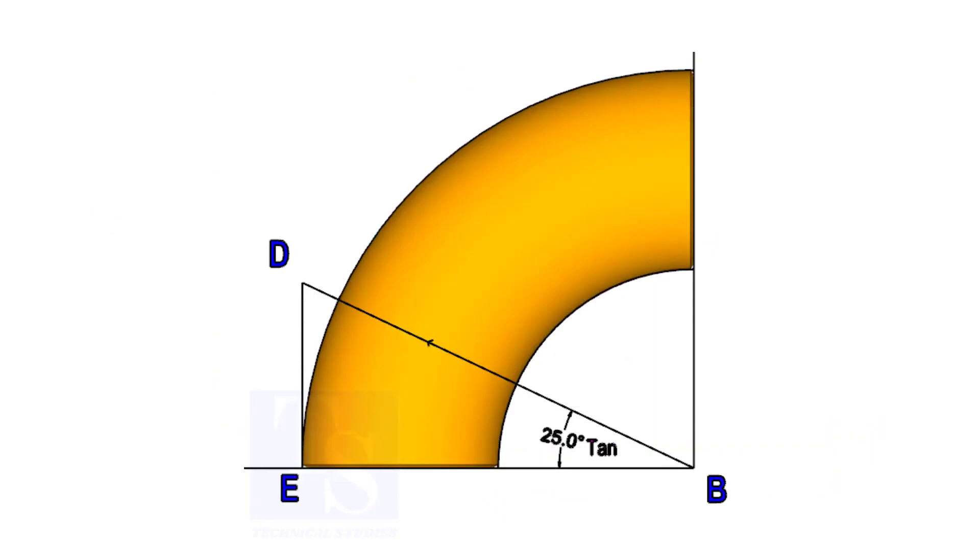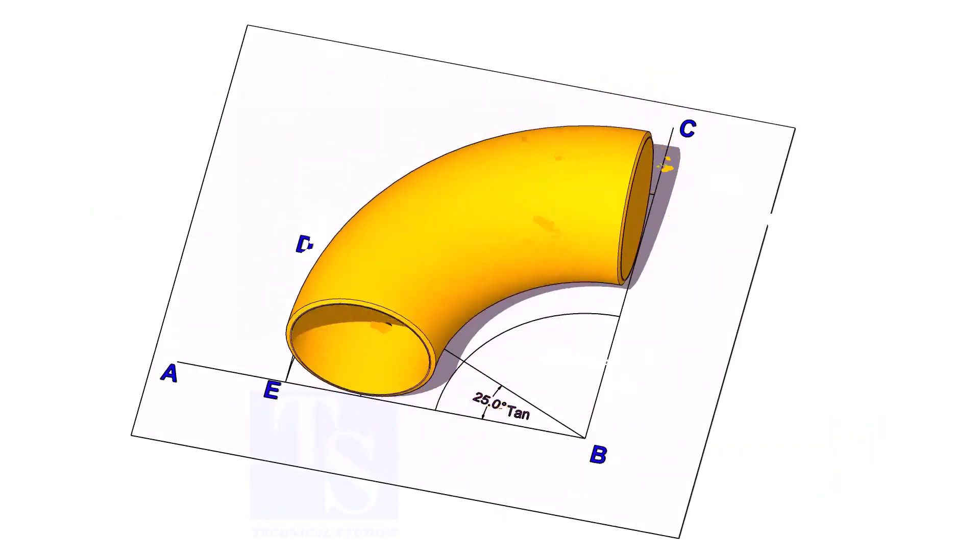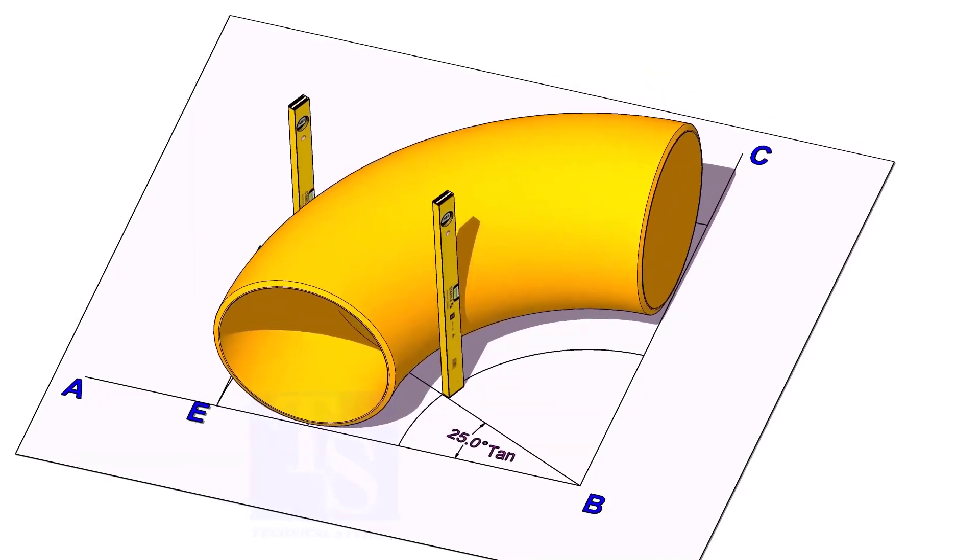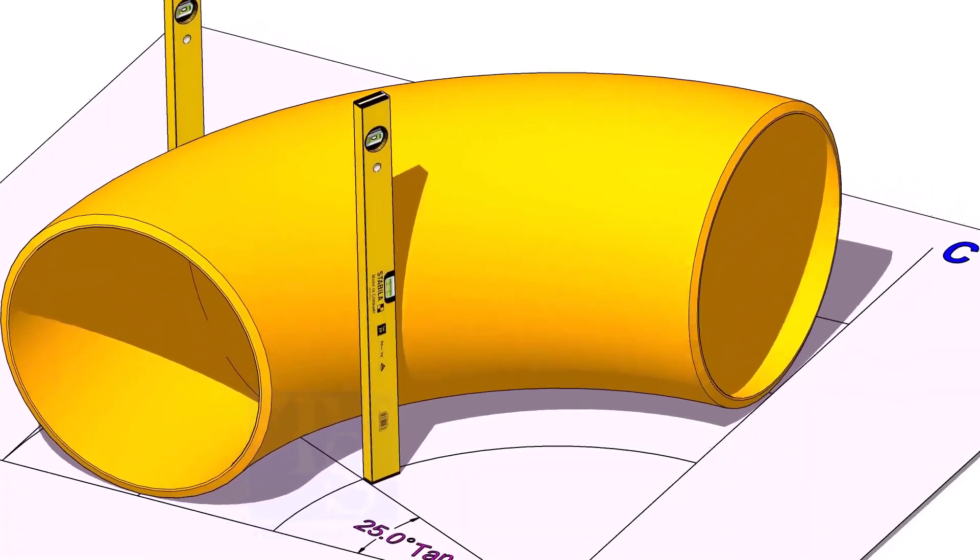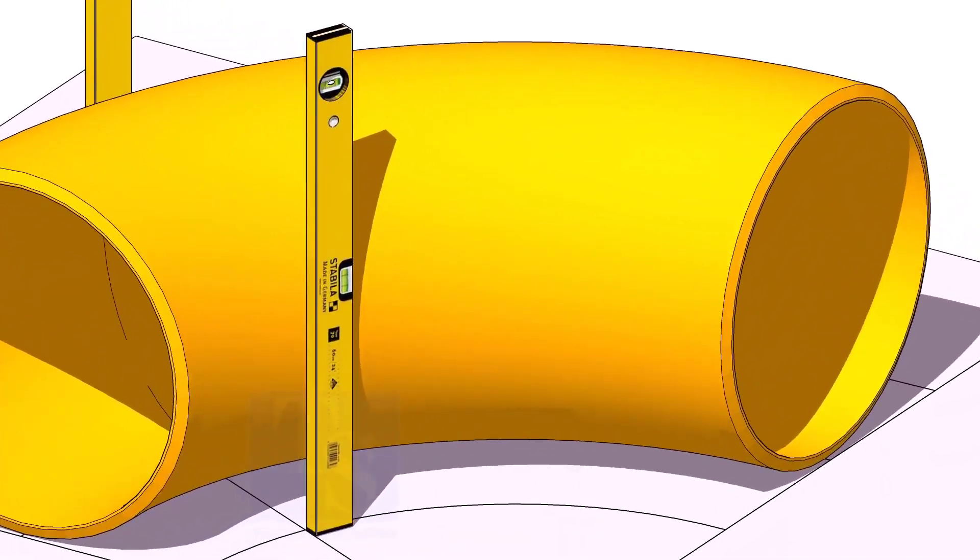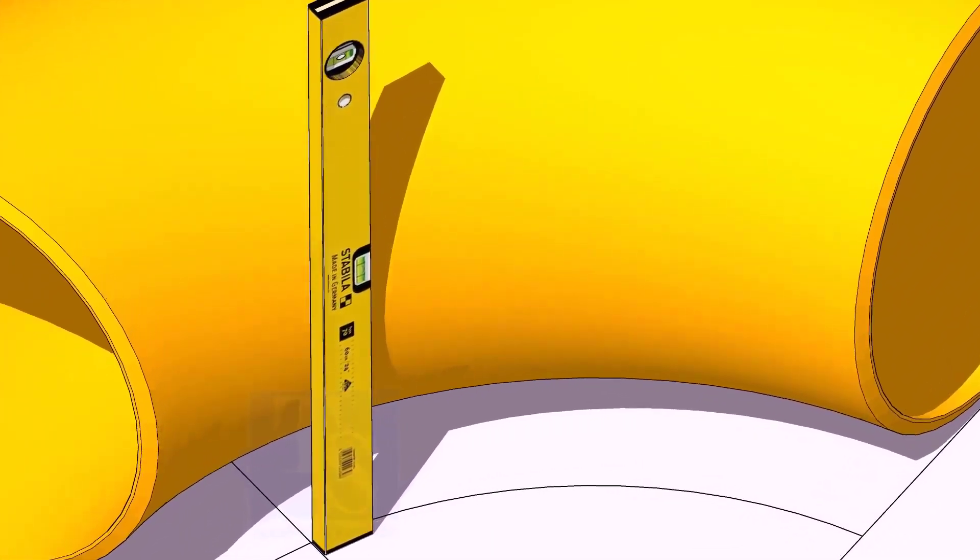Now, put the elbow exactly on the layout as shown. Hold two large level bottles at the edge of the elbow on both sides vertically and strike a mark where the level bottle edge touches the elbow.